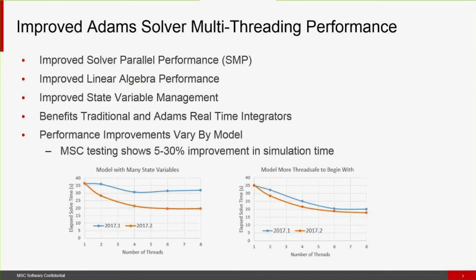As typical with ADAMS solver performance improvements, your mileage will vary and improvements will vary by model. Given that there's been a large focus on state variables, models with many state variables will tend to show more improvements on multi-threads than models that have very few state variables and were more thread-safe to begin with. In our in-house testing, we've seen five to thirty percent — some cases even better — improvement in simulation time spread across two, four, and eight threads.